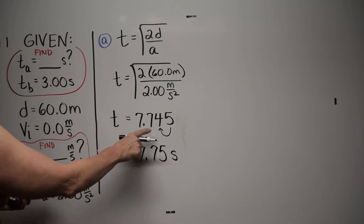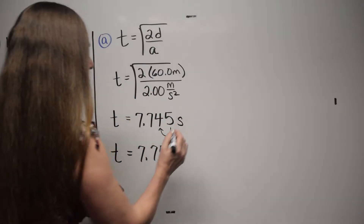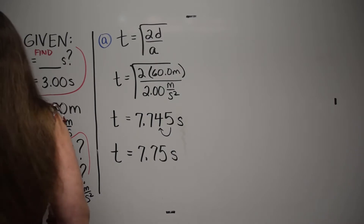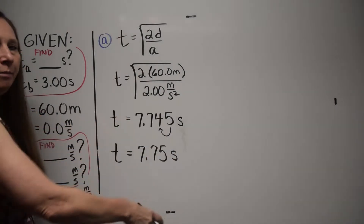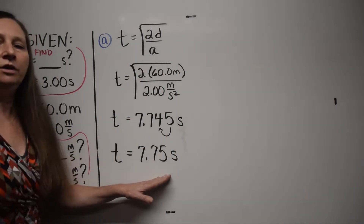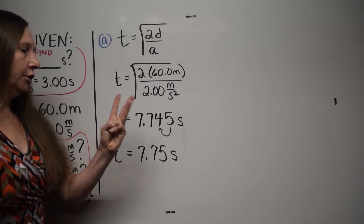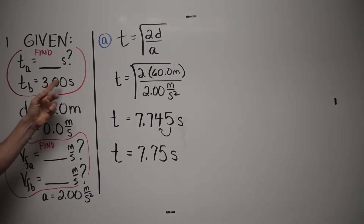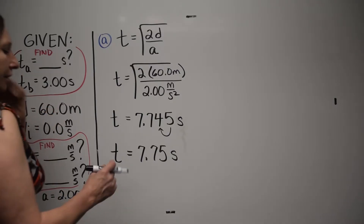If I want to use this number in a later problem, I would use the truncated value 7.745. This is truncated — chop it off. The final answer is rounded to the correct number of significant figures: three significant figures, so 7.75 seconds.